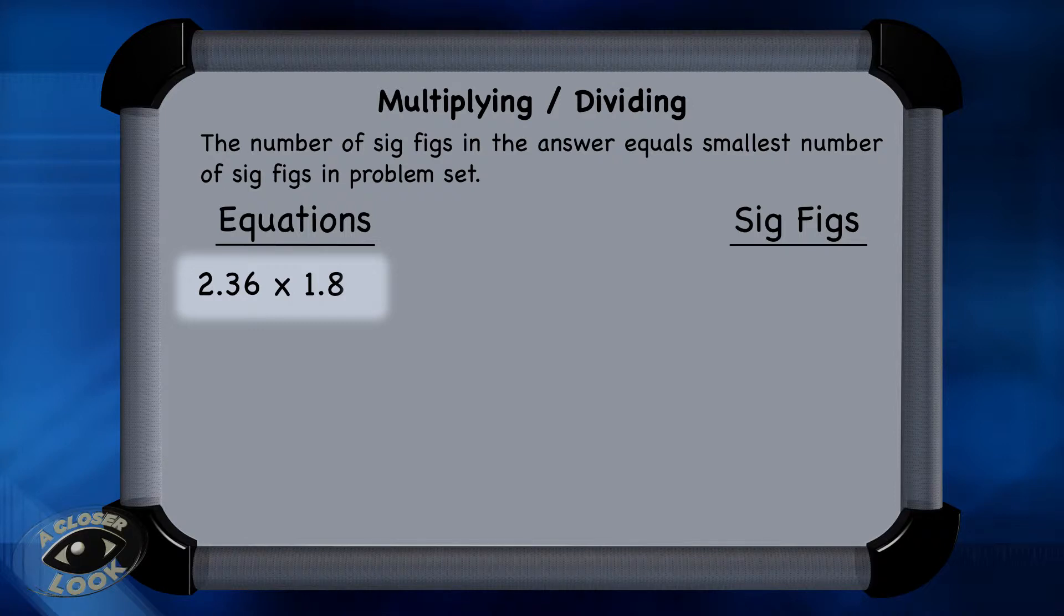So take 2.36 times 1.8. That equals 4.248. But there are two sig figs in the value 1.8, and that is smaller than the three sig figs in 2.36. Therefore, the final answer has to be rounded to two sig figs, or in this case, 4.2. It's the same thing in this next example.